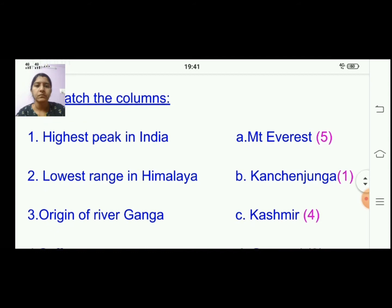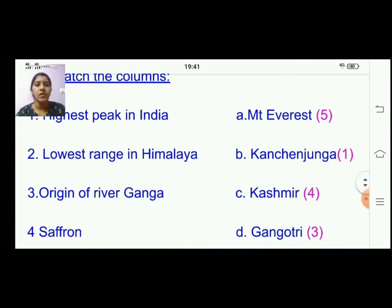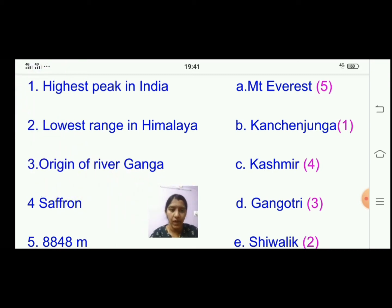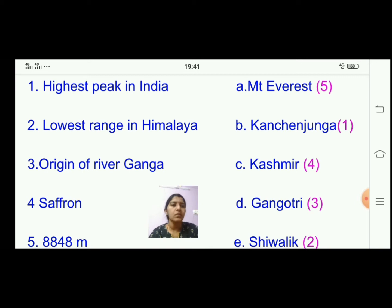Second: lowest range in Himalayas — the answer is Shivalik. Third: origin of river Ganga — the answer is Gangotri. Fourth: saffron — we get it from Kashmir. Fifth: 8,848 meters — that is Mount Everest. These are the answers for match the following.